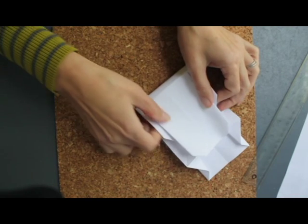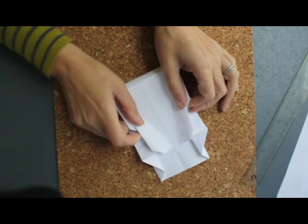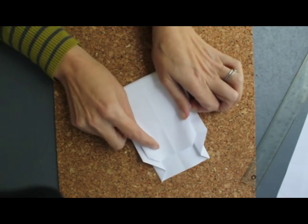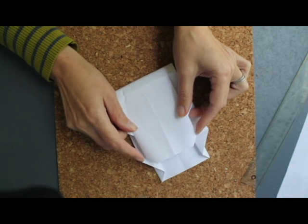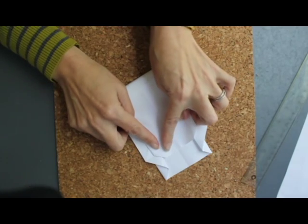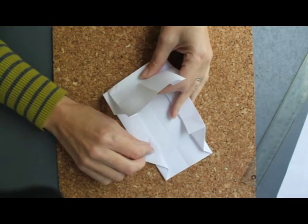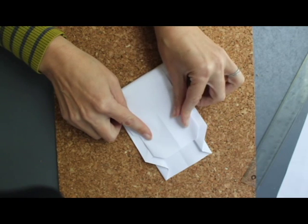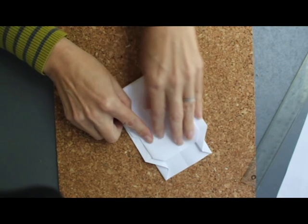And you're going to fold this end, new end, up so that the bottom of this triangle, or the lip here, is at the top of these flaps. And that's how I gauge it.